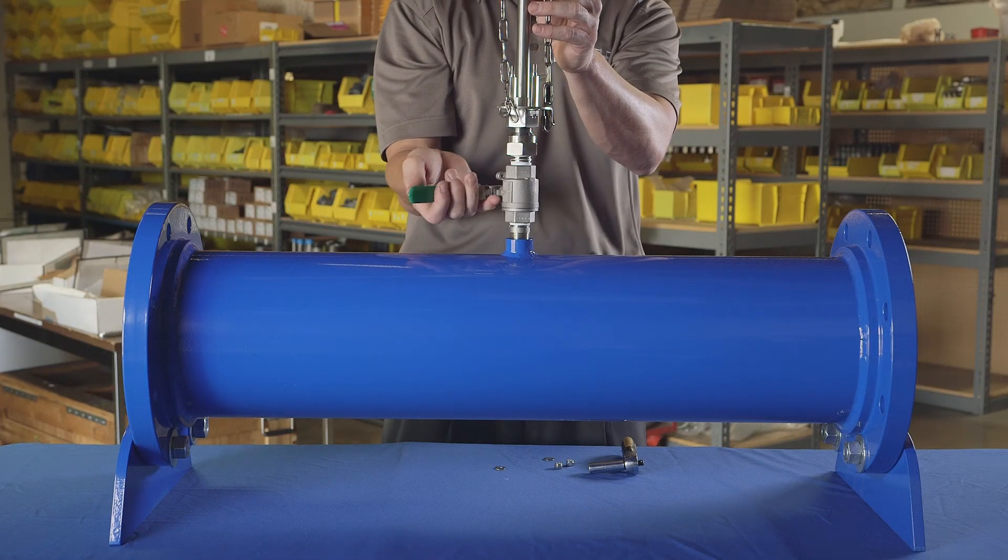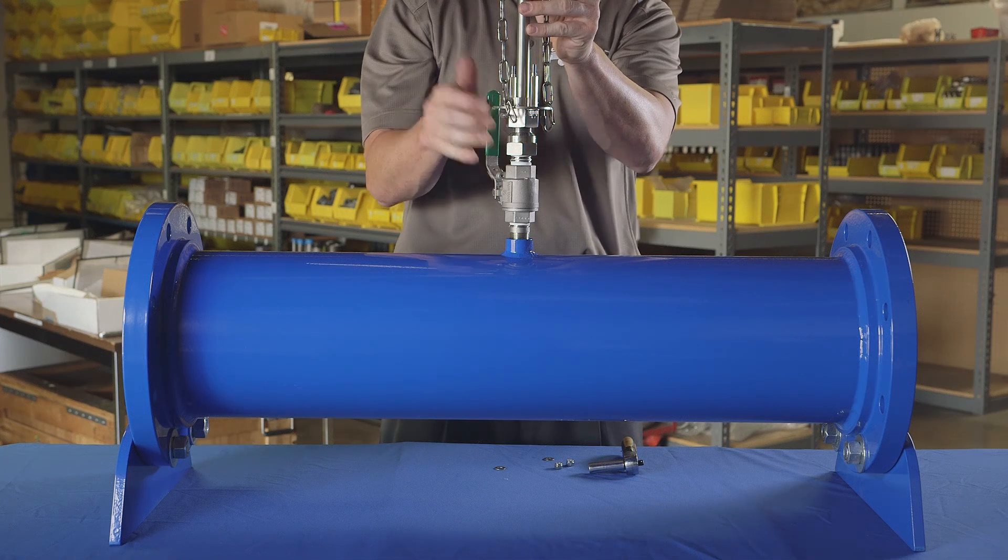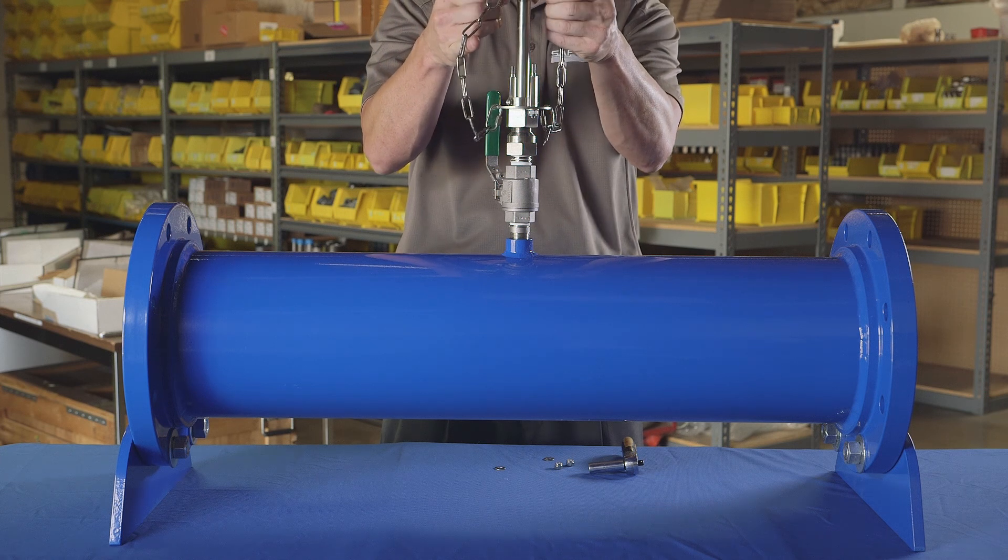Slowly open the ball valve and begin to slide the solution tube down into the main. If water begins to leak past the packing nut, tighten until the leak stops.